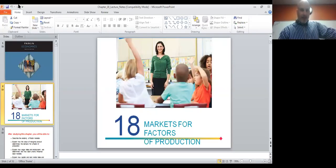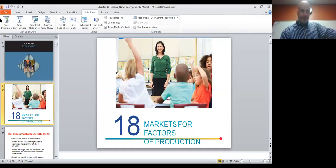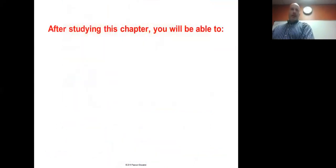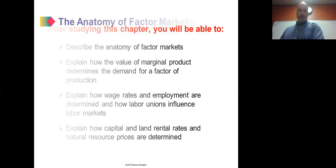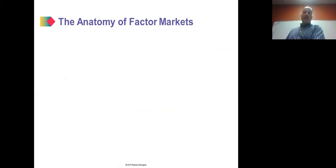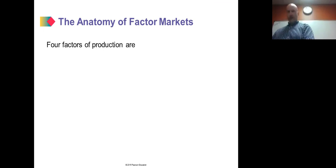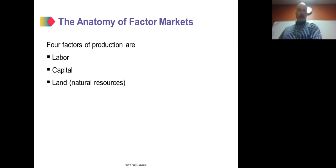Chapter 18: markets for the factors of production. Let's move right into the anatomy of factor markets. The four factors of production are labor, land, capital, and entrepreneurship.